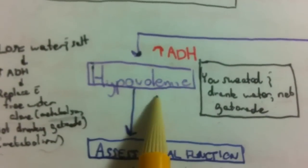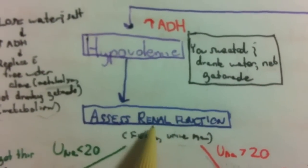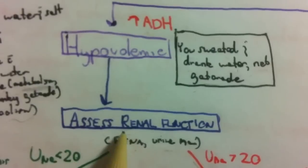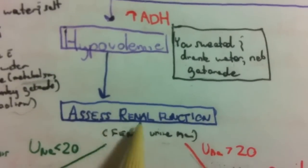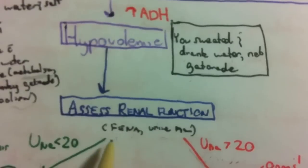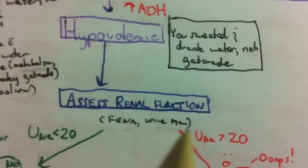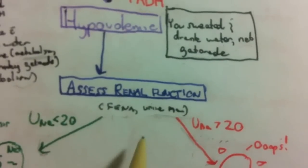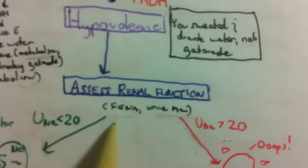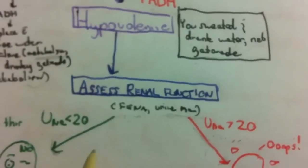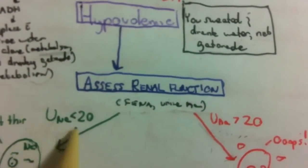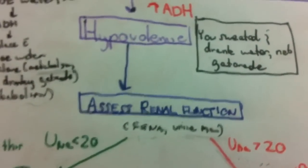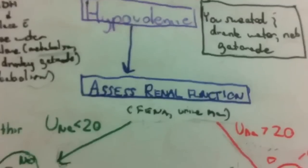So in hypovolemic hyponatremia, ADH is up. The next thing you want to do is assess renal function, because this will tell you the cause. You can do this with the FENa or just urine sodium — I prefer urine sodium because you need it for the FENa anyway.